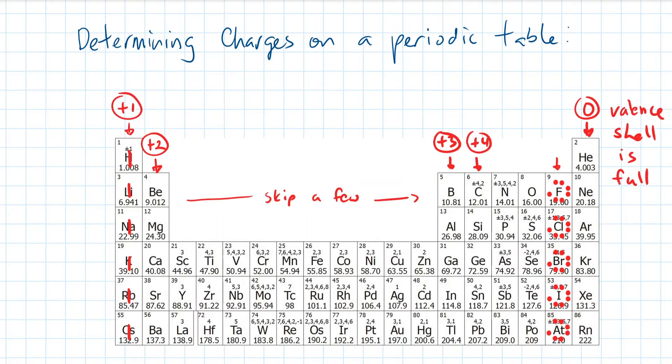The halogens all have seven out of the eight valence electrons, and it will powerfully take a spare electron from anywhere to become stable. That's why halogens all have a charge of negative one. Do you start to see a pattern here?